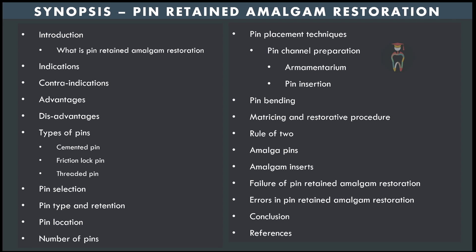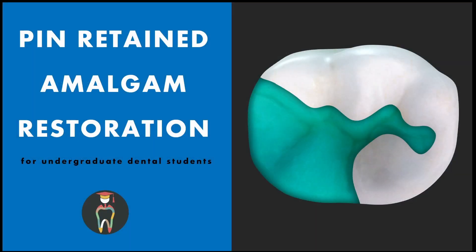Students can cite three standard textbooks: Operative Dentistry by Marzouk, The Art and Science of Operative Dentistry by Sturdevant, and Operative Dentistry by Schwartz. These three textbooks cover pin retained amalgam restorations in detail. Thank you for listening. This is a complicated topic, but if a student can remember the points covered in this presentation, it will be adequate to write the answer in an exam, answer viva questions, and even assist in clinical work.